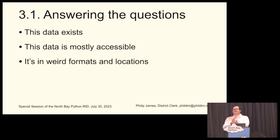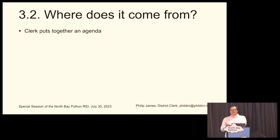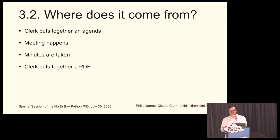Let's talk about where it comes from. A clerk will start each meeting by putting together an agenda, normally in collaboration with whoever are the elected or appointed representatives of the committee or commission. They figure out what items to talk about and publish that agenda multiple days before the meeting. The meeting happens — it can take anywhere from 10 minutes to, I think, the longest Alameda City Council meeting clocked in at 6 hours starting at 7 p.m. During that meeting, minutes are taken. The clerk puts together a PDF of the minutes, which talk about high-level discussion items, who brought up what pieces of information, and the voting record.